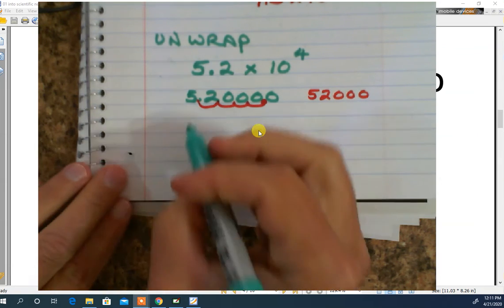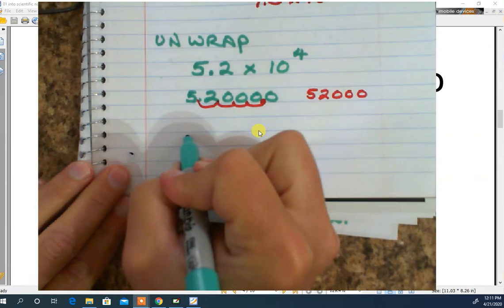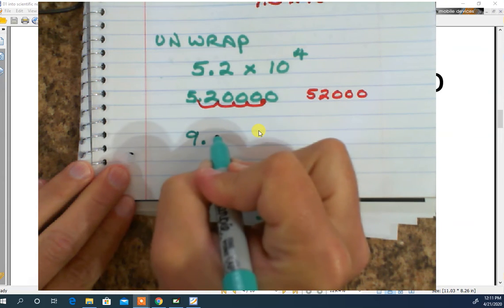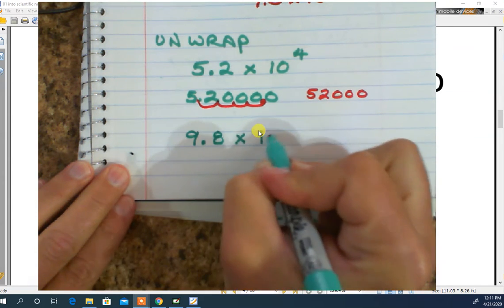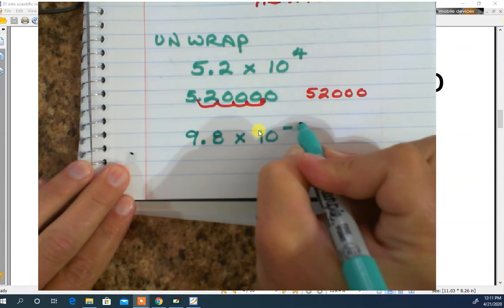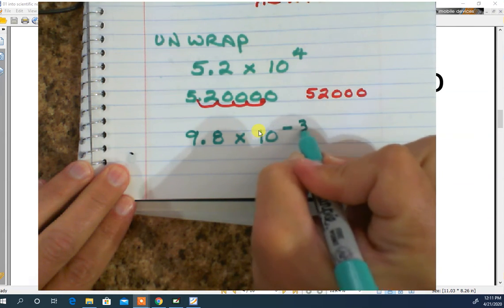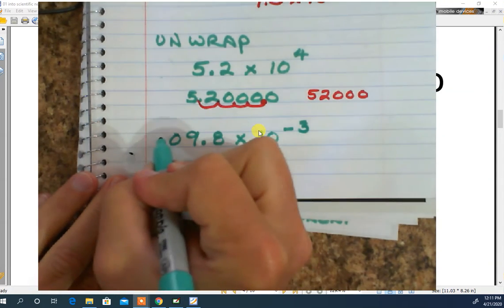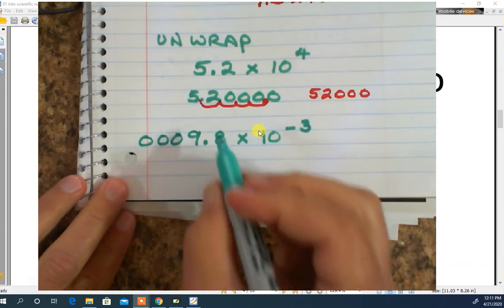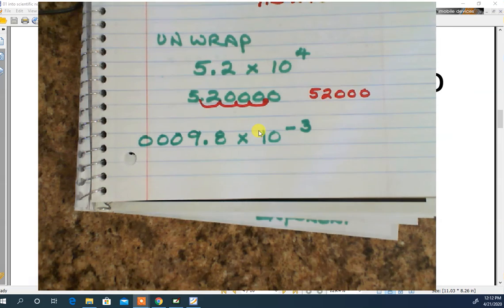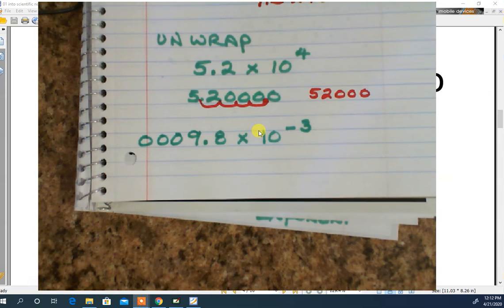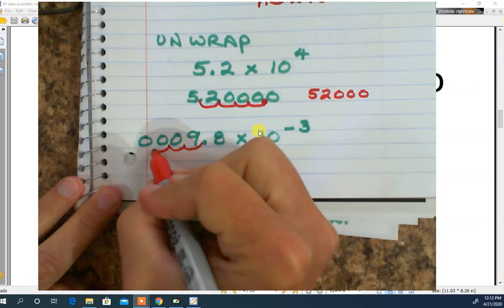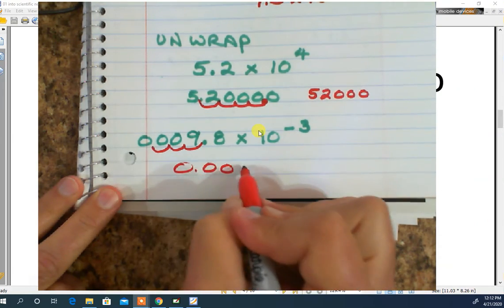Let's do another unwrapping. Let's go with 9.8 times 10 to the negative 3. So I need to add three zeros. Where do I need to add them? To the front. And make three jumps. So I'm left with 0.0098.